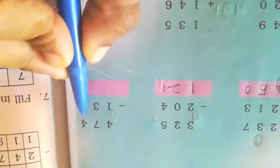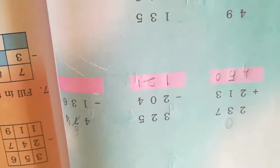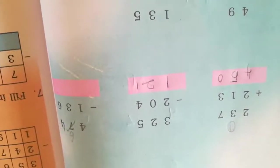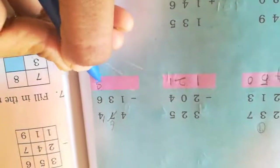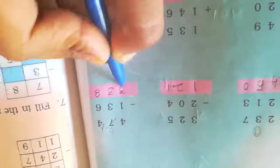Next, look at the ones number: 4 minus 6 is not possible, so we want to borrow. Here it will become 6, here it will become 14. So 14 minus 6 — keep 14 in your mind, count after 6: 7, 8, 9, 10, 11, 12, 13, 14. How many fingers? 8 fingers. Then 6 minus 3 is 3, and 4 minus 1 is also 3.